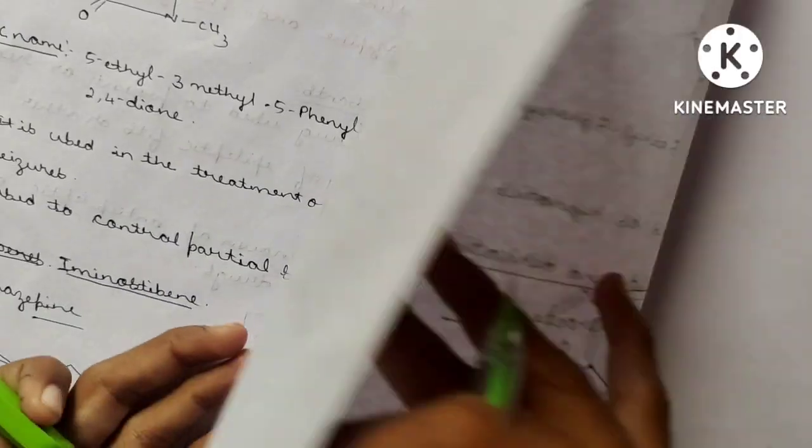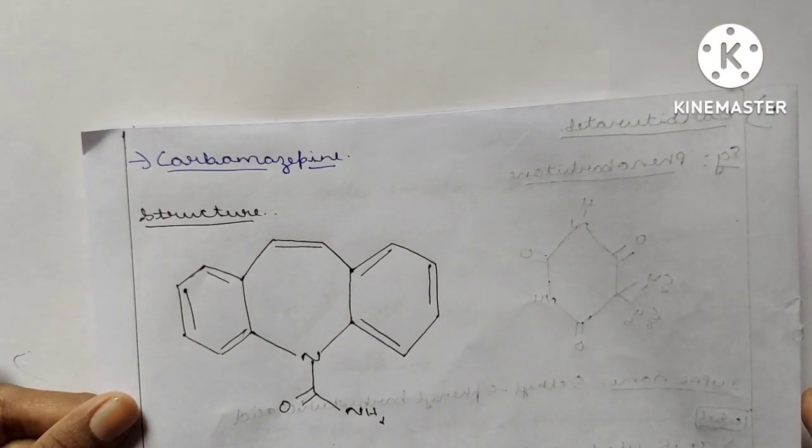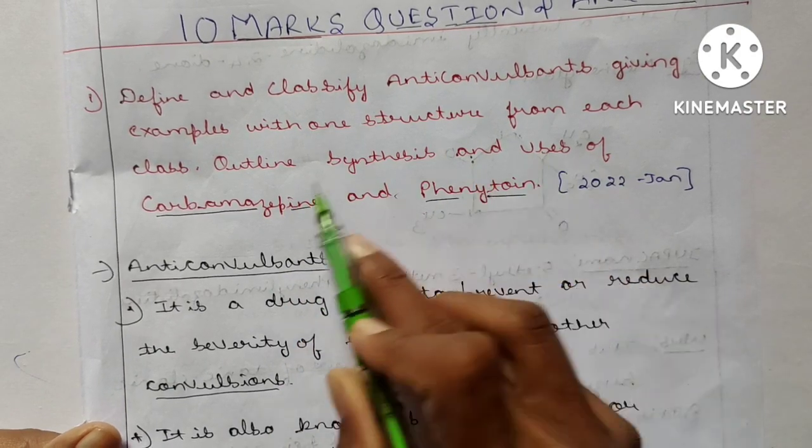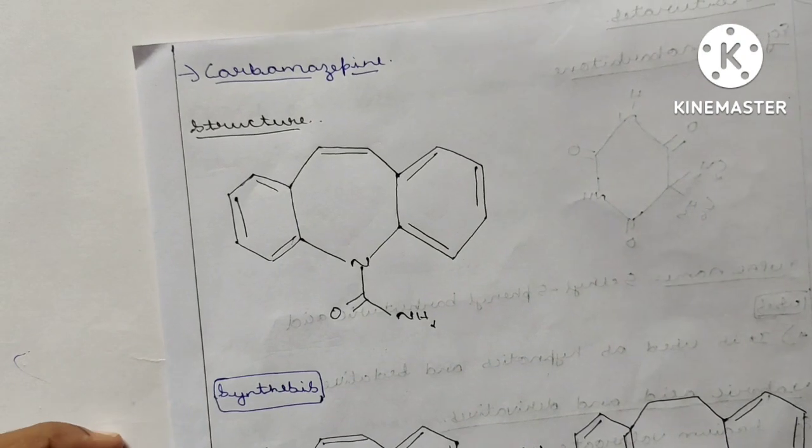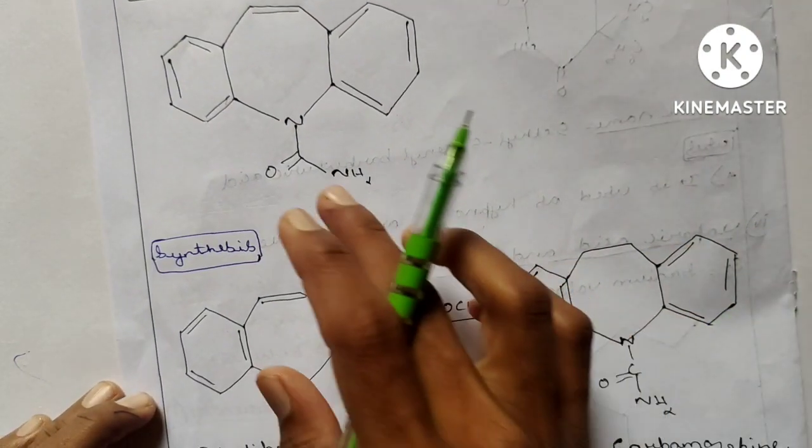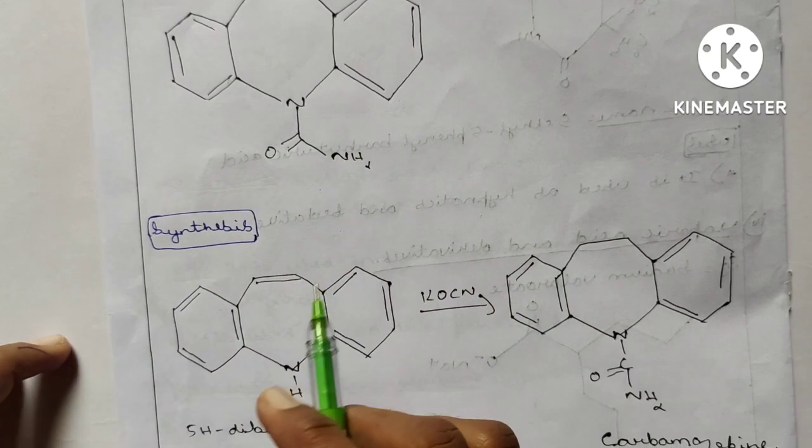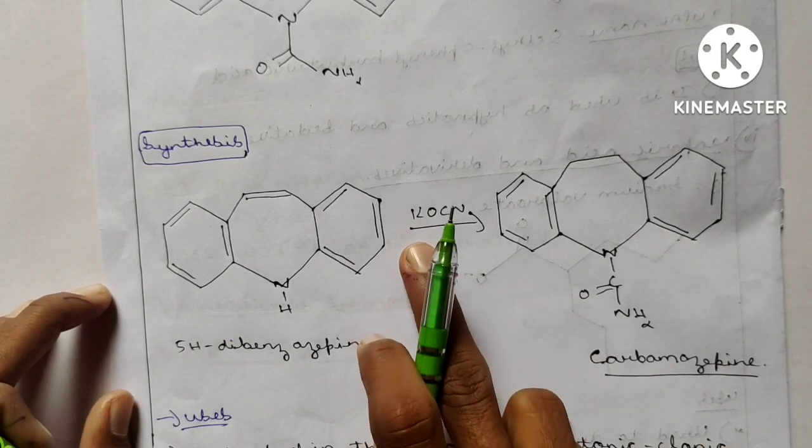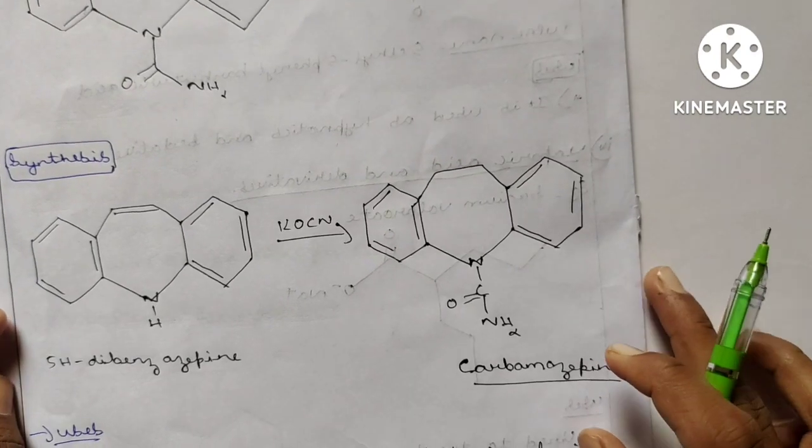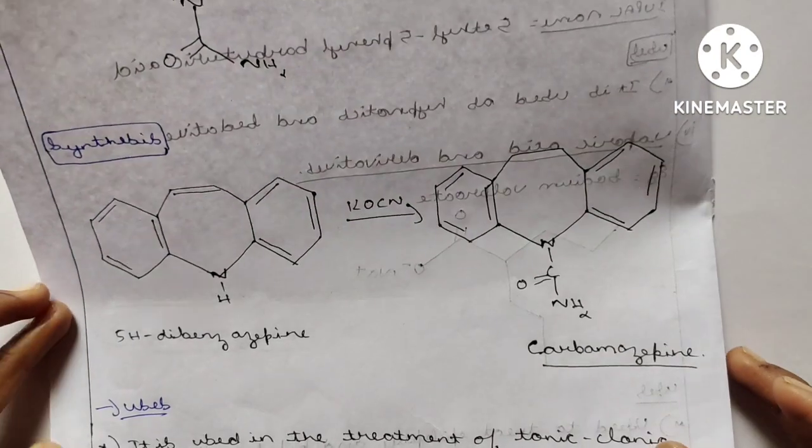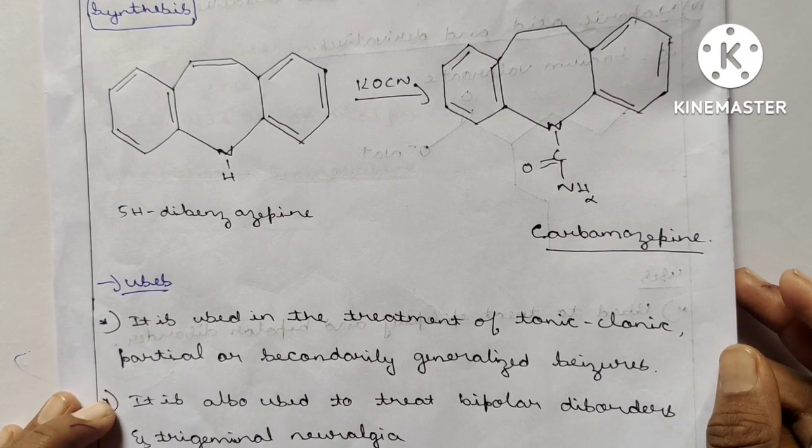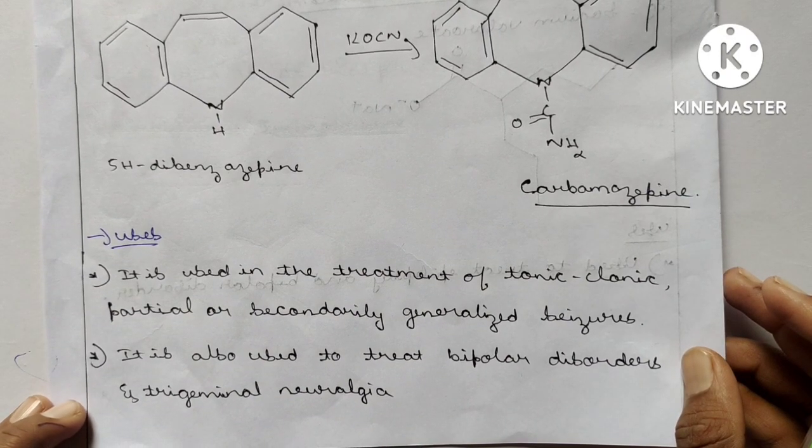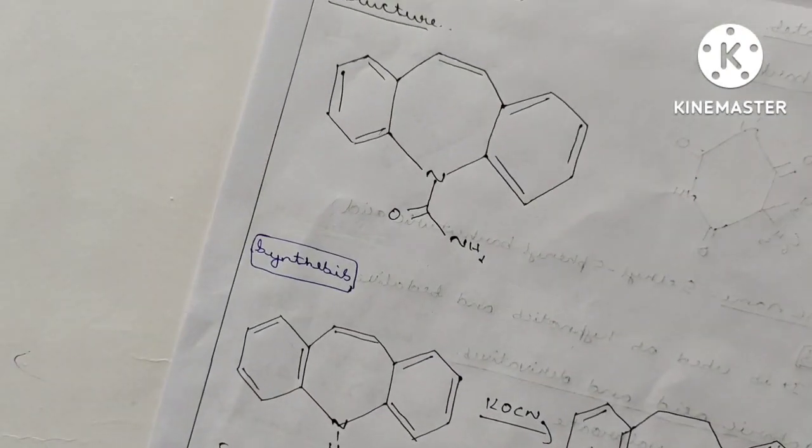Next one is carbamazepine. Here they are framed one more question: outline synthesize and uses of carbamazepine and phenytoin. Carbamazepine structure: nitrogen will attack and SN2 amine group. Synthesize very simple: dihydrodibenzazepine when reacted with KOCN potassium cyanide, then there will be formation of carbamazepine. Uses: it is used in the treatment of tonic-clonic partial or secondary generalized seizures, used to treat bipolar disorders and trigeminal neuralgia. It is a neurological disorder.